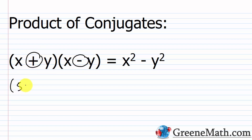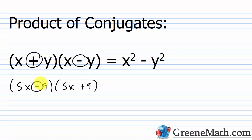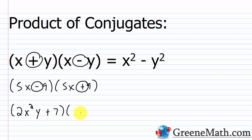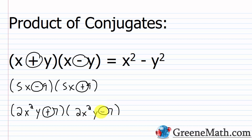You could also have something like 5x minus 9 multiplied by 5x plus 9 — a 5x and a 5x, a 9 and a 9, with a minus and a plus sign. As another example, 2x²y plus 7 multiplied by 2x²y minus 7. Again, this part is the same in each case, and you have a plus and a minus — the same two terms with different signs.